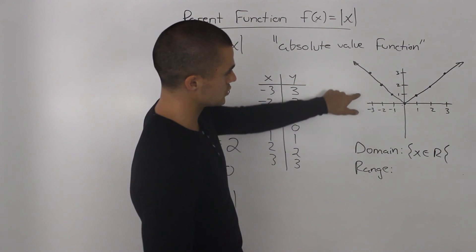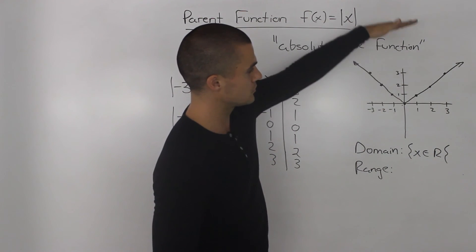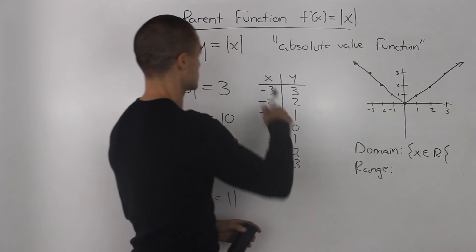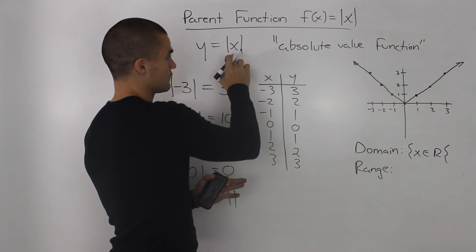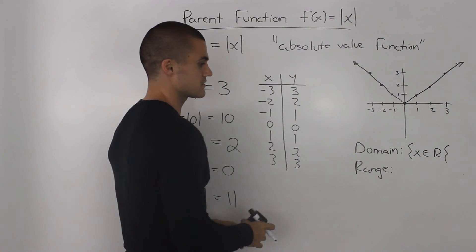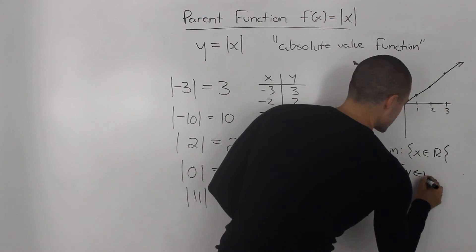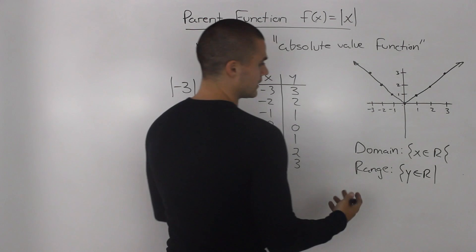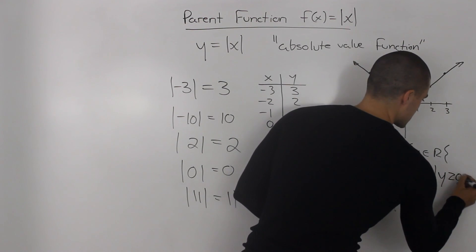Now the range, notice how the y value has to be greater than or equal to zero. It's never negative. Because as we mentioned, absolute value functions take any negative values and make them positive. So the y values will always be positive. So the range, y is an element of real numbers, as long as it's greater than or equal to zero.